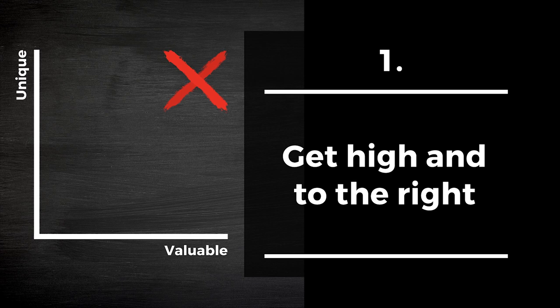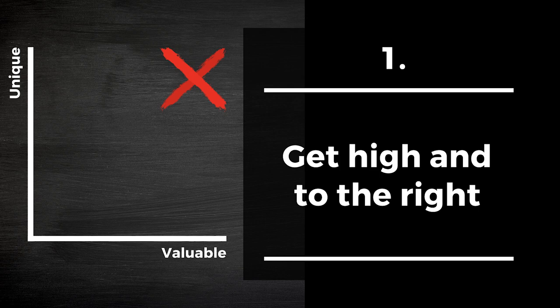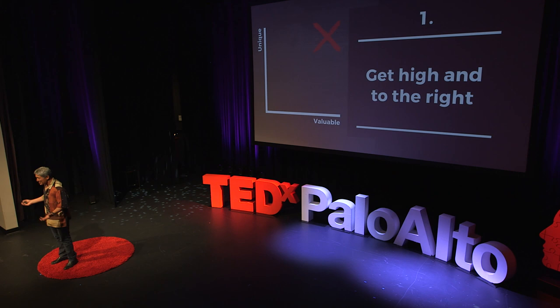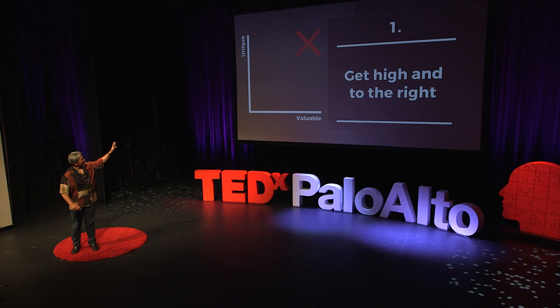The first thing I want to communicate is this two-by-two matrix. The vertical axis measures uniqueness or differentiation; the horizontal axis measures the value — the goodness of what you do. High-end consulting firms charge about $5 million to tell you that you need to be in the upper right-hand corner. You're getting that free from TEDx tonight. As you think about your products, services, not-for-profits, even your own career positioning, the value and the denting of the universe all occur in the upper right-hand corner — when you are both valuable and unique.